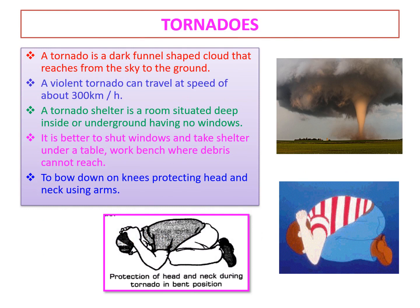Today's next topic is tornadoes. A tornado is a dark funnel-shaped cloud that reaches from the sky to the ground. Look at the diagram at the top of the screen. Most tornadoes are weak, but a violent tornado can travel at a speed of about 300 km per hour. Just imagine — 300 km in one hour.